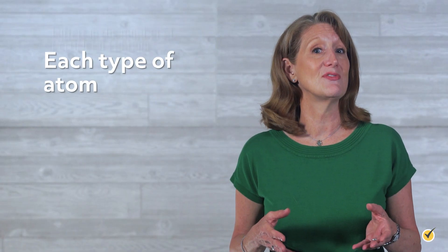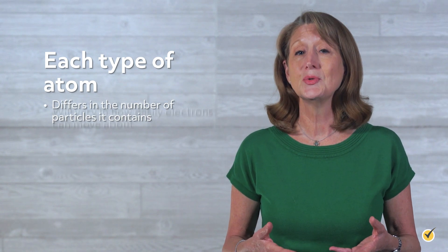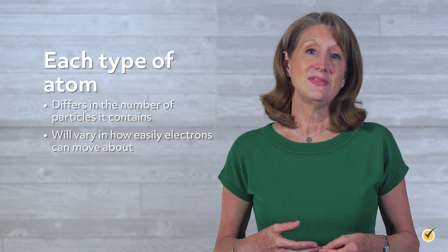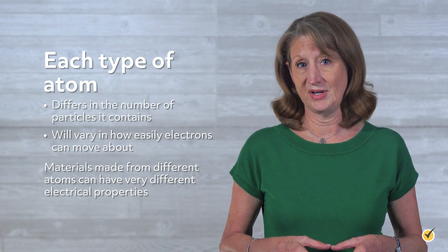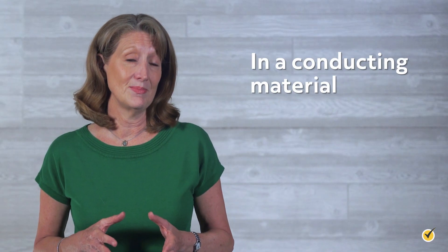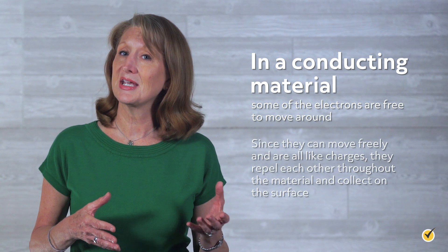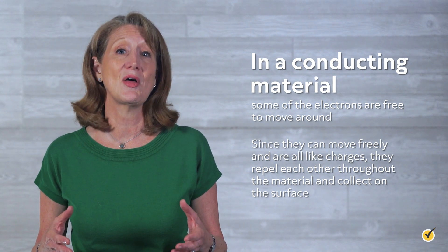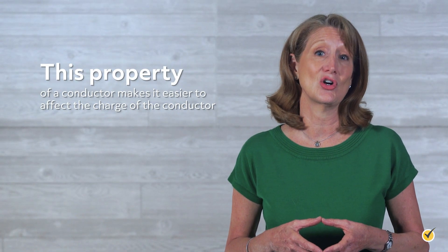Each type of atom differs in the number of particles it contains, and in conjunction with a few other factors will vary in how easily electrons can move about. This means that materials made from different atoms can have very different electrical properties. In a conducting material, some of the electrons are free to move around. Since they can move freely and are all like charges, they repel each other throughout the material and collect on the surface. This property of a conductor makes it easier to affect the charge of the conductor.